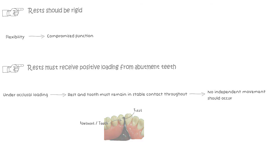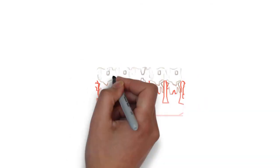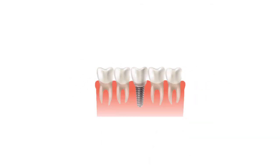So in the end, just a side note, it is not necessary for the rest to be on a tooth as a part of the partial denture. An implant can also serve to function as a rest itself, as the occlusal loads will be directed along the long axis of the implant, and in turn providing vertical support to the denture.